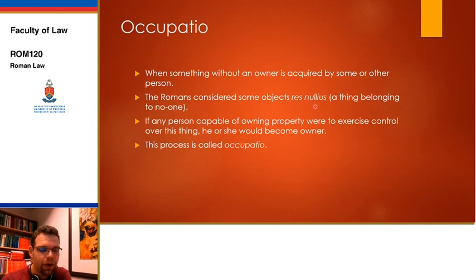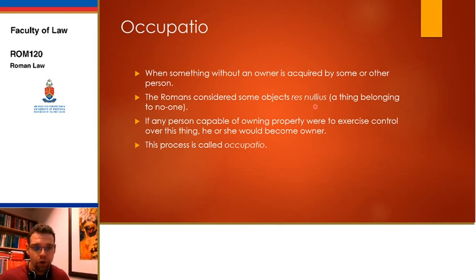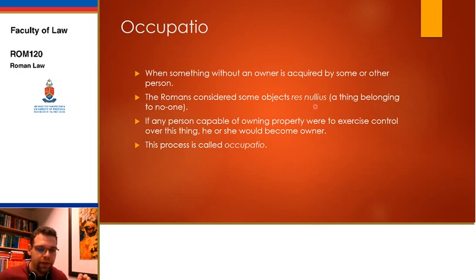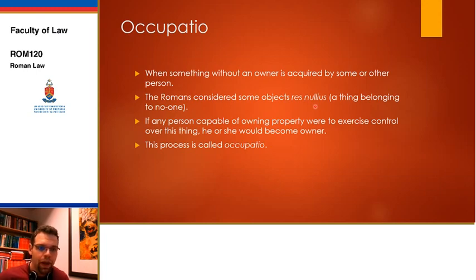The second category of res nullius includes objects that were once someone's property but are no longer. If you abandon an object — remember, abutendi includes the right to alienate the object — you can just leave it somewhere. Say you're in a café reading a book and decide you no longer want it, so you leave it on the table. If someone then takes the book, because you've abandoned it and decided you no longer want to be owner, they become owner as soon as they exercise control over it. That's also occupatio.